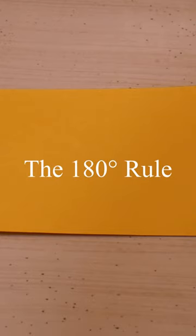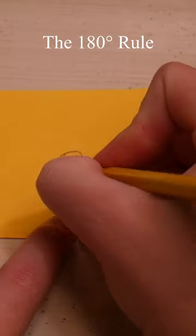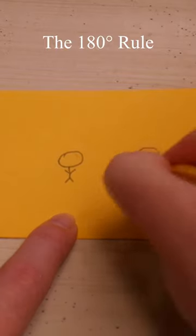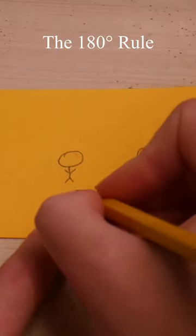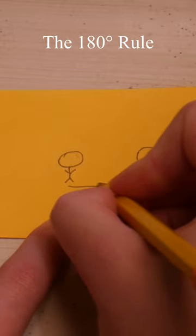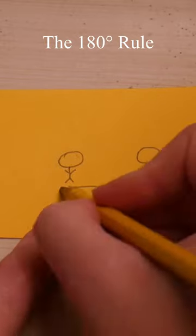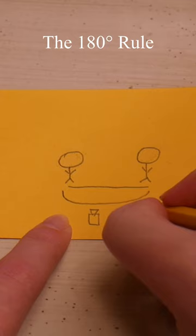The 180 rule in filmmaking is basically keeping the camera on one side of your characters. For instance, if you had two characters facing each other, you could easily follow this rule by visualizing a line between the characters and keeping the camera on one side of that line, ensuring that it never crosses it.